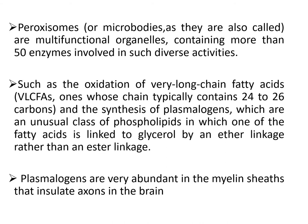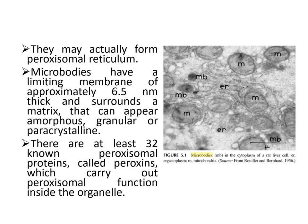Plasmalogens are found in numerous human tissues with particular enrichment in the nervous, immune, and cardiovascular systems. Microbodies have a limiting membrane approximately 6.5 nanometers thick surrounding a matrix that can appear amorphous, granular, or paracrystalline. There are at least 32 known peroxisomal proteins called peroxins, which are special docking proteins for obtaining material from the cytosol and endoplasmic reticulum.